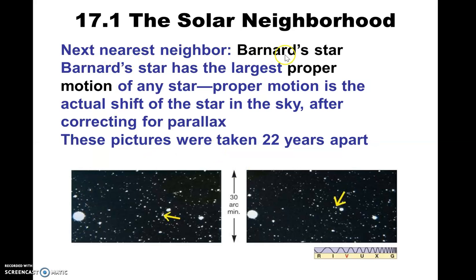As I mentioned before, there's Barnard's Star. Barnard's Star exhibits what's called proper motion — it actually moves in the night sky without parallax. Very slowly, mind you, but over time it does move.